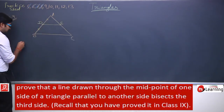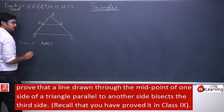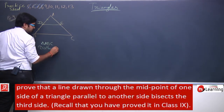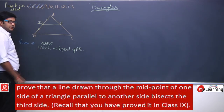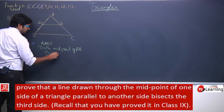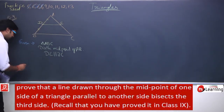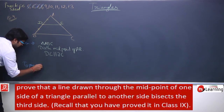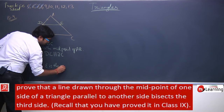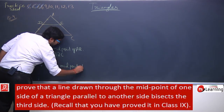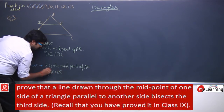Given: Triangle ABC, D is the midpoint of AB, and DE is parallel to BC. To prove: E is the midpoint of AC, i.e., AE = EC.